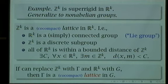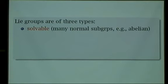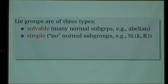Before I talk about lattices, let me say something about Lie groups. It's a fact that Lie groups come in three types. First, there are solvable groups — ones that have lots and lots of normal subgroups. The basic example is an abelian group, where every subgroup is normal. The opposite end are simple groups, which have basically no normal subgroups — there could be some finite collections of normal subgroups, but practically there are none. An example is SLK of R.